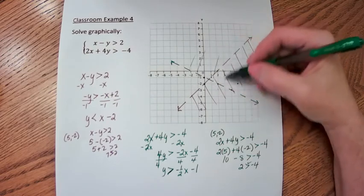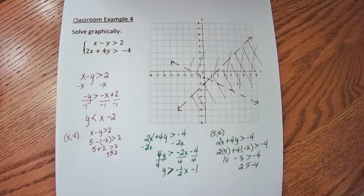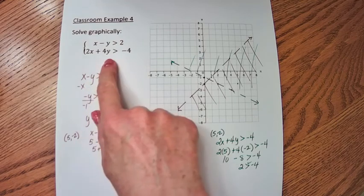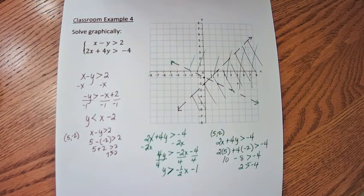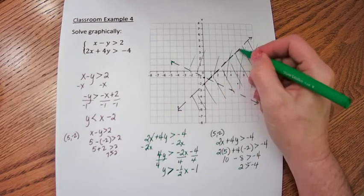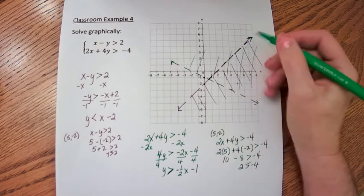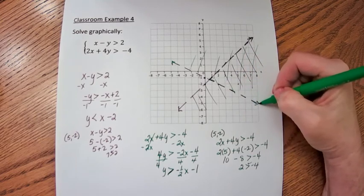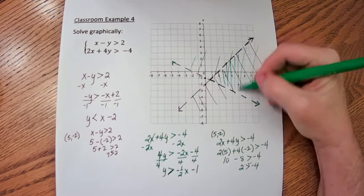So for this line, or that inequality, I would graph above. So what does this mean for the whole system? What that means is this region right here, that's dashed, is the solution region that makes both inequalities true.